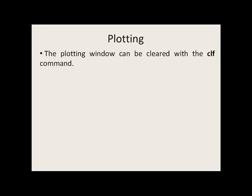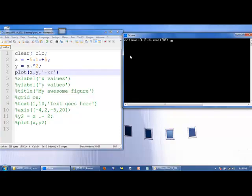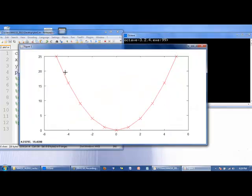Finally, the plotting window can be cleared with the CLF command. In this example, we've created values of x that go from negative 5 to 5 in step sizes of 1, and we say that y is x squared. We will plot x and y, so y versus x, using the formatting of a solid line with x at all the data points and make it a red line. And this is what we generate.